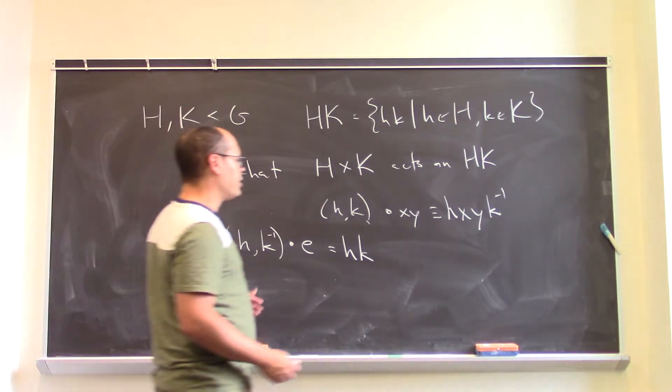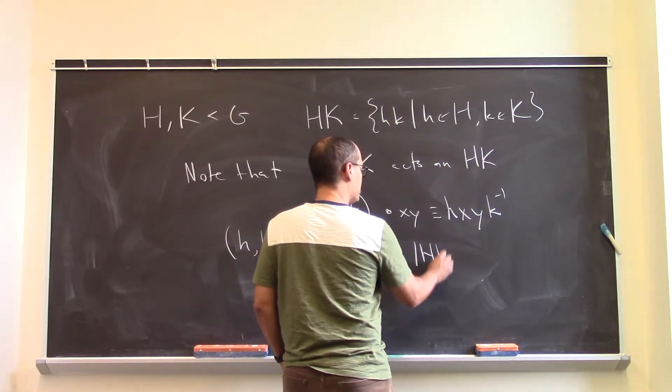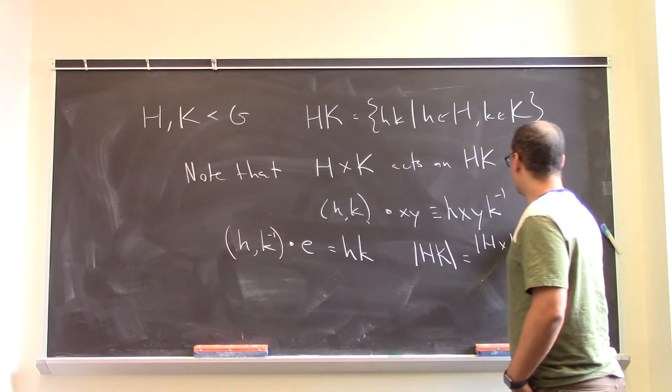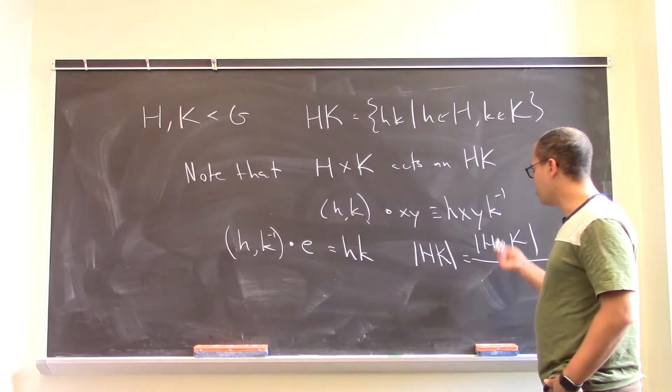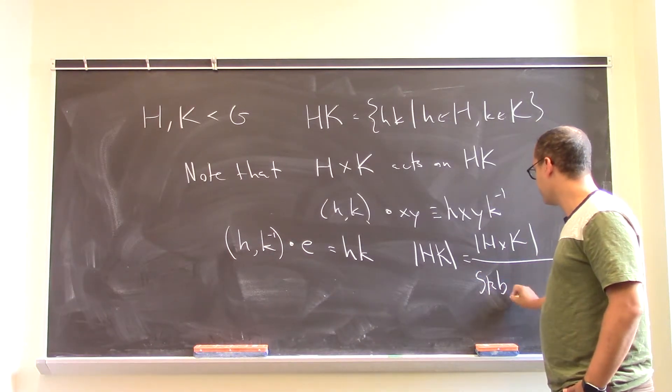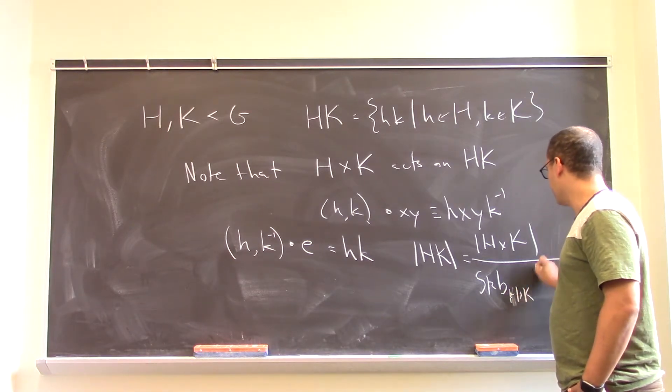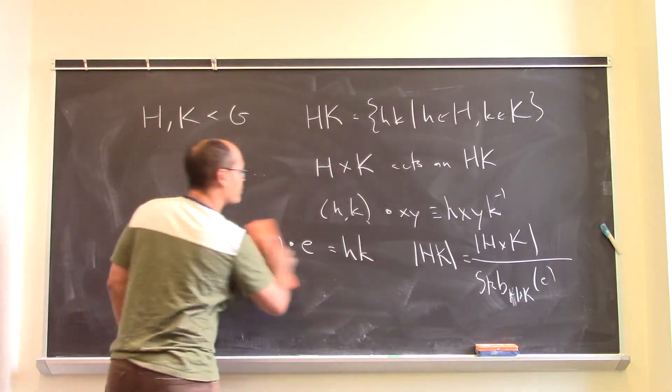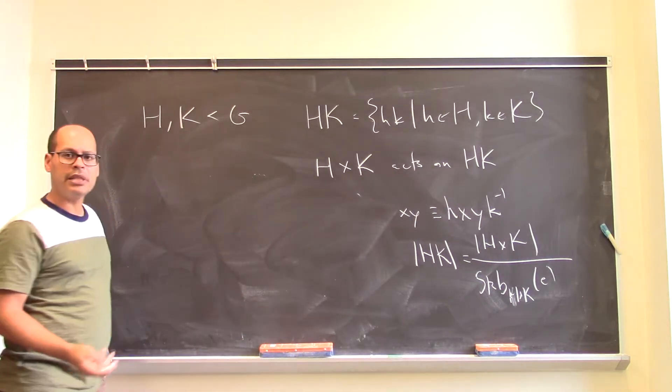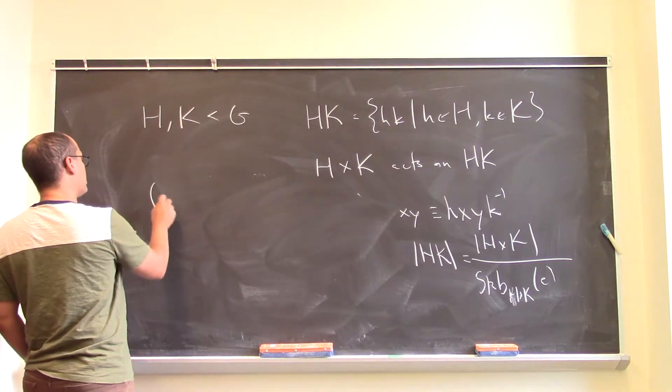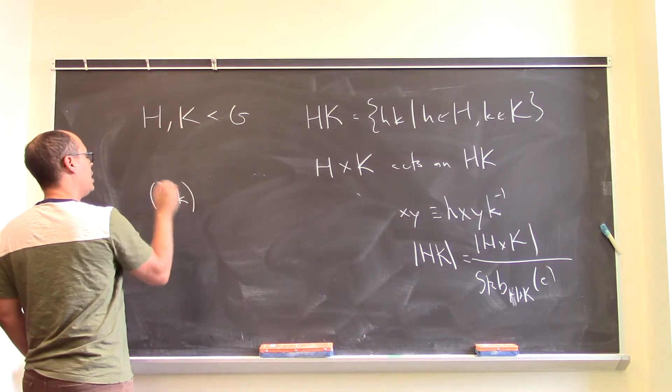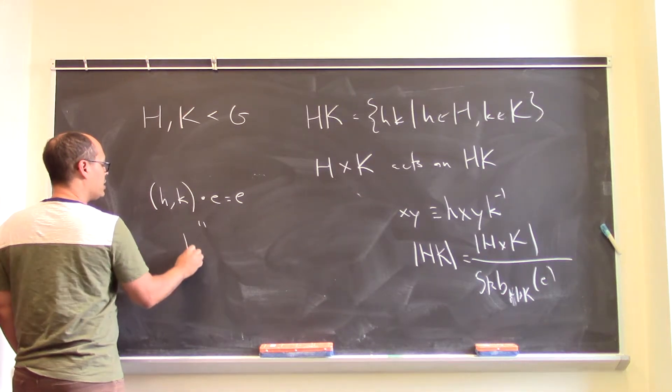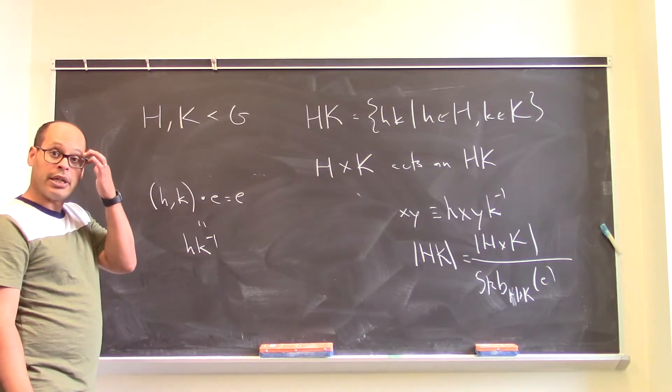So the Orbit Stabilizer Theorem tells us that the size of the orbit, which is the size of HK itself, is the same as the size of the group, H cross K, divided by the size of the stabilizer. Stabilizer in H cross K of the identity. Okay, well, so what is the stabilizer of the identity? Well, the stabilizer of the identity, well, those are just the H comma K's such that when I act on E, I get E. But what is this action? It's HK inverse.